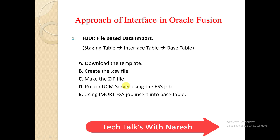We upload the file using the upload functionality, and it goes to the UCM server. Then we run the import ESS jobs, which insert the data into the base tables. The approach is: when inserting data, it first goes into the staging table, then the interface table — via the respective first job. When we run the import ESS job, the data gets validated and finally inserted into the base table. That is the FBDI process.